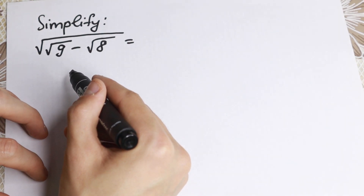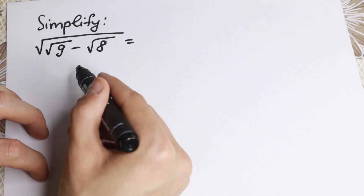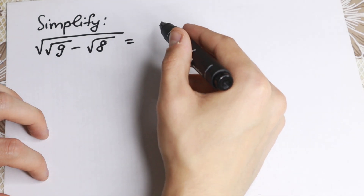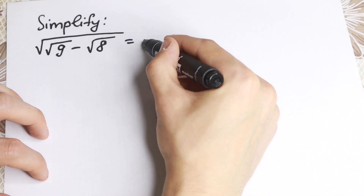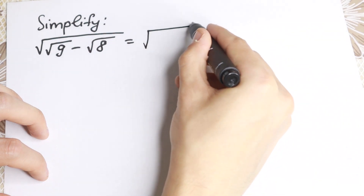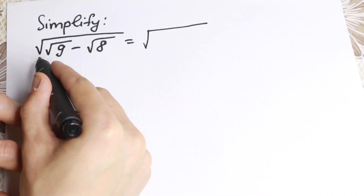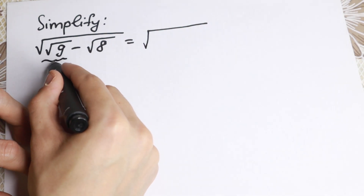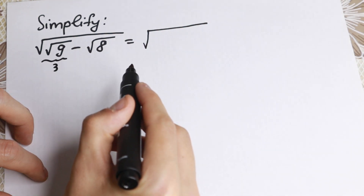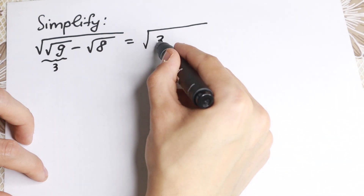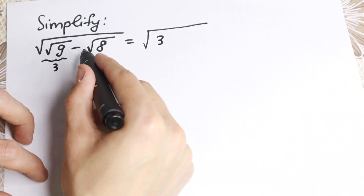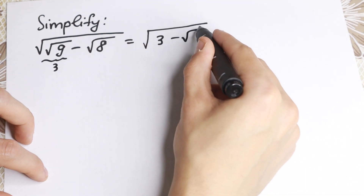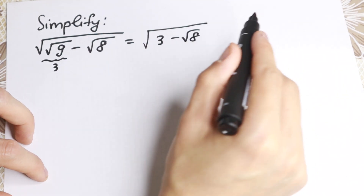A lot of students ask me why — because we need to know a little bit about math. Take a look closely. We have the square root of this expression. Square root of 9 equals 3, so we have 3, and for square root of 8 we write it the same: minus square root of 8.